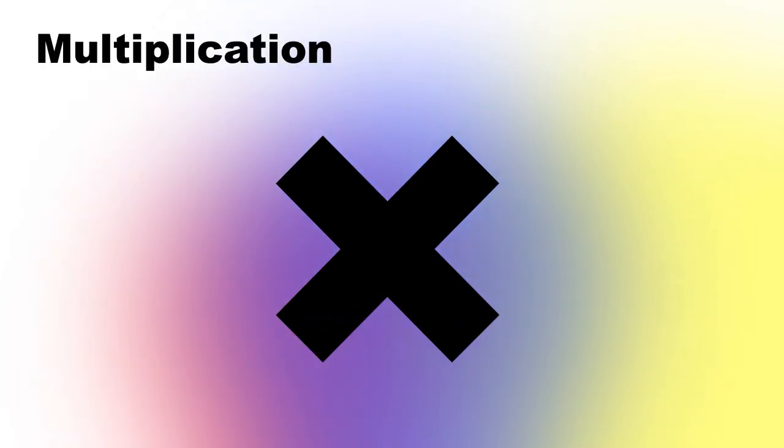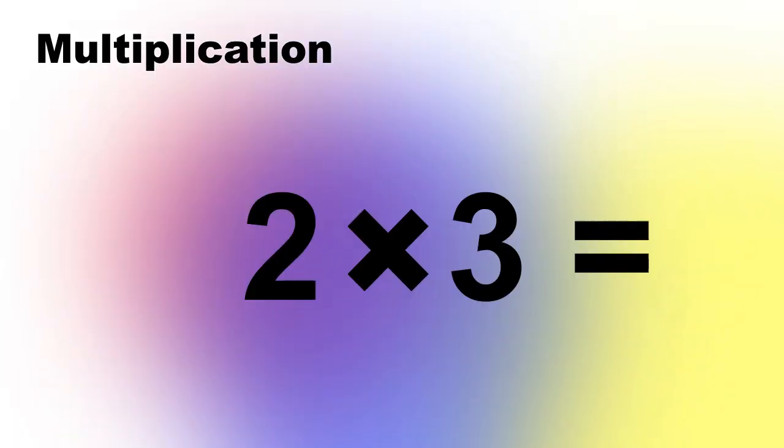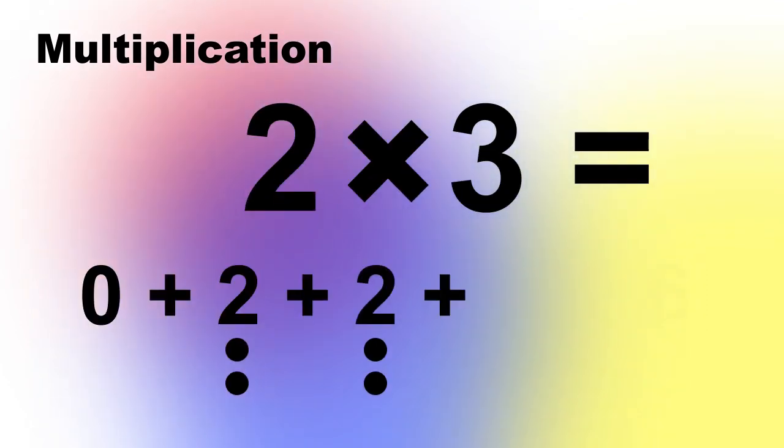Now let's build our next mathematical operator, multiplication, from what we already have. We can define 2 times 3 as 0 plus 2 plus 2 plus 2.